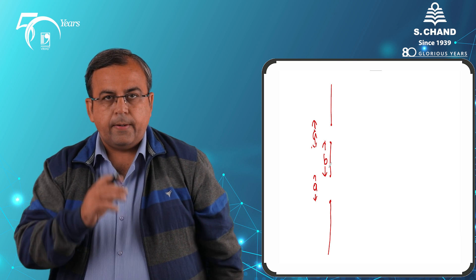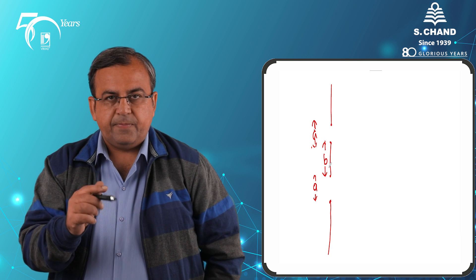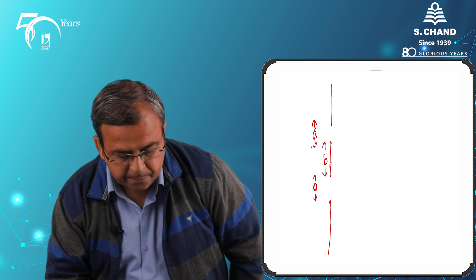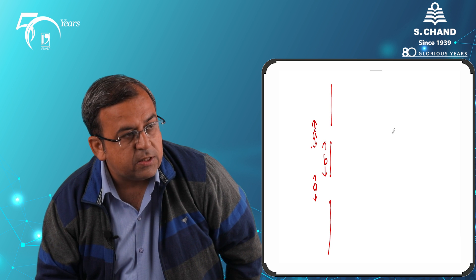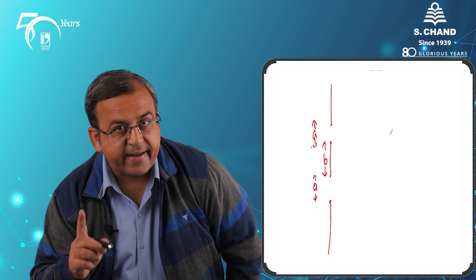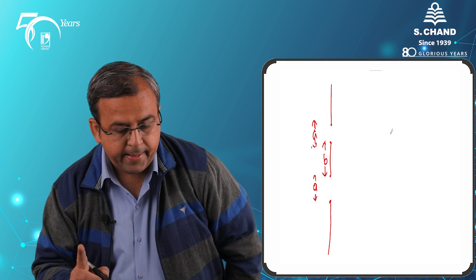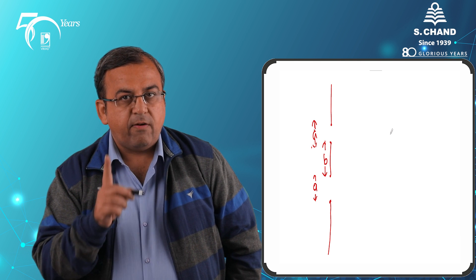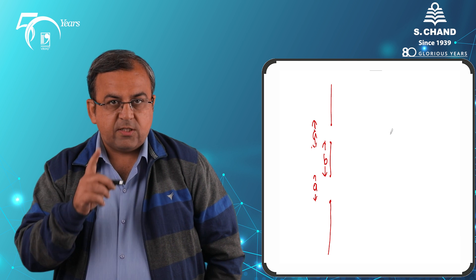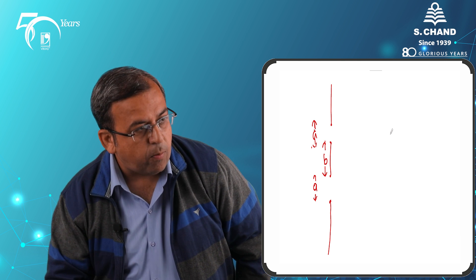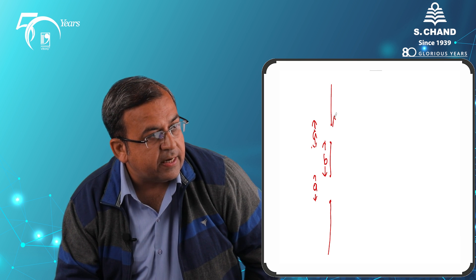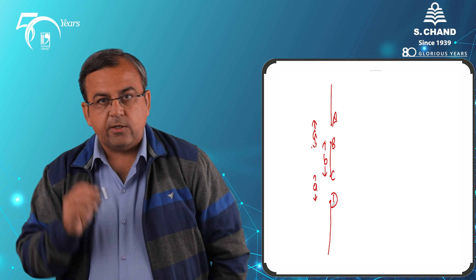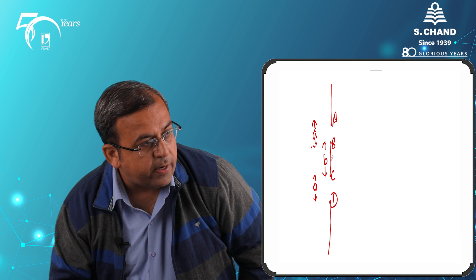As we can see on the screen, the opaque part — the width of that opaque part — is considered to be small b. So we are talking of two rectangular slits parallel to one another and perpendicular to the plane of the paper. The width of each slit is small a, which we normally represent as A, B and C, D — so AB and CD are the two slits. This center point we are considering as O.